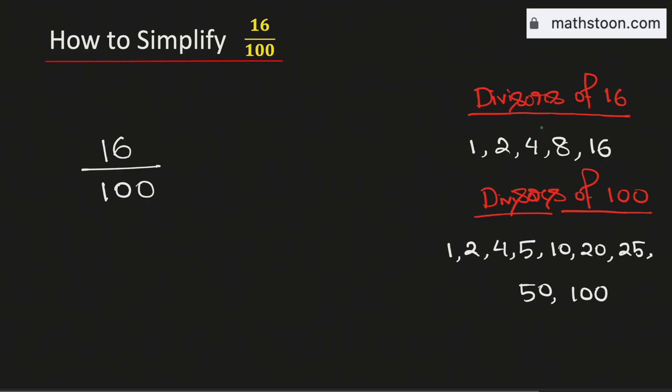Among these lists, see that 4 is the greatest one which is common in these two lists. Therefore, 4 is the greatest common divisor of 16 and 100.